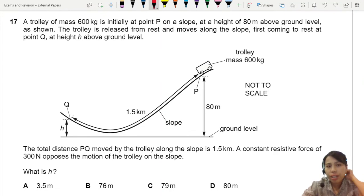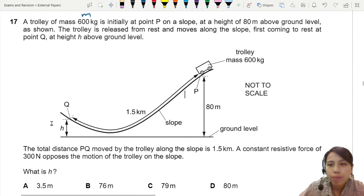A trolley of mass 600 kg is initially at point P on a slope at a height of 80 meters above ground level. So our reference is this ground level. The trolley is released from rest and then goes down and comes to rest at Q.